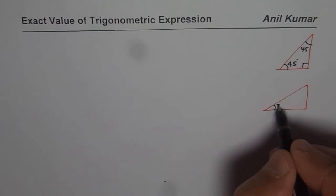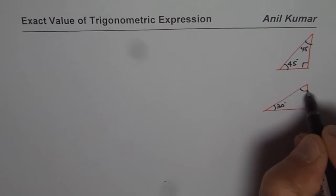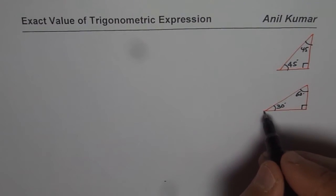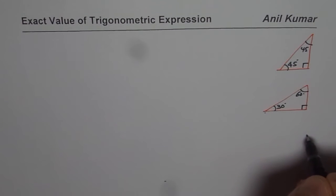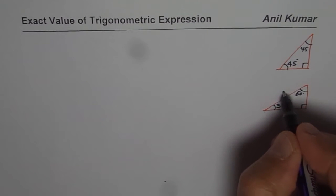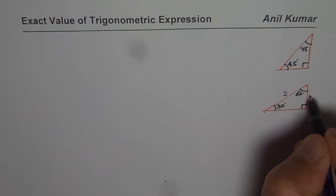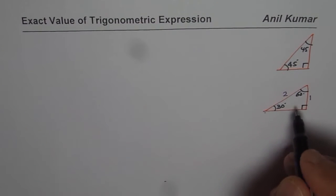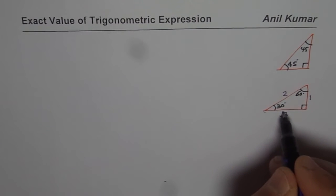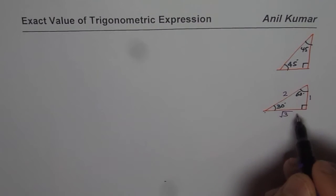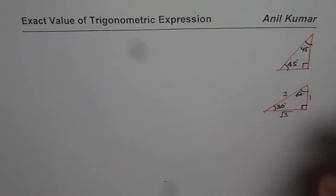For the 30-60-90 triangle, think about an equilateral triangle with sides of two units. The smaller side opposite 30 degrees is 1 (half of 2), and the perpendicular height is square root of 3, since 2 squared minus 1 squared equals 3. That's how you derive the side lengths.